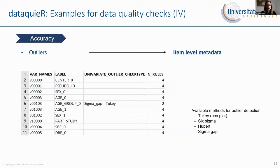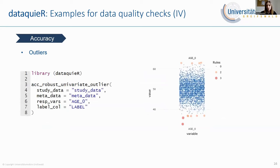Let me show you two data quality checks from the accuracy dimension. First, let's look into outliers. This information is stored in the item-level metadata, and currently there are four methods available for outlier detection — DataQuer uses them in combination. If not all shall be performed, you can specify the subset of methods in the column univariate outlier check type. The column n-rules states the number of methods required in consensus to flag a single observation as an outlier. For our study data, here for age at baseline examination, you can see in the plot how many rules flag a single observation as an outlier, helping to develop a better understanding of the gravity of the problem.